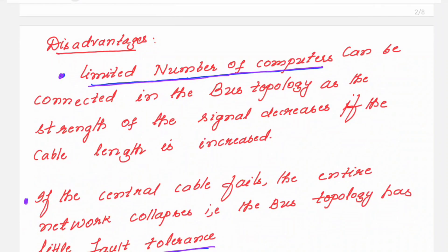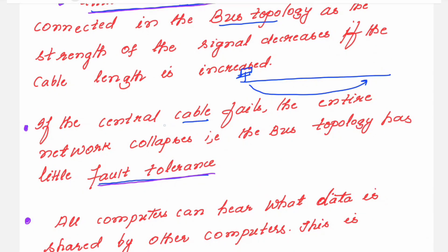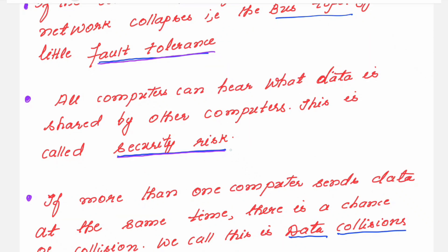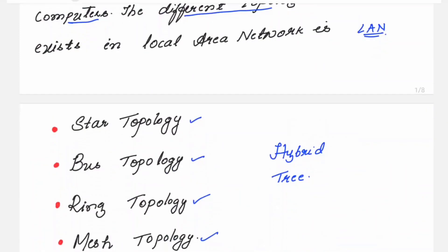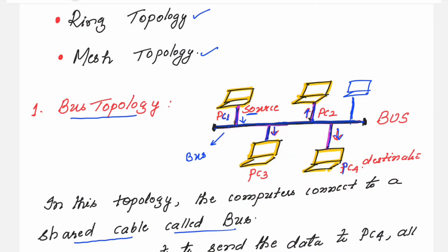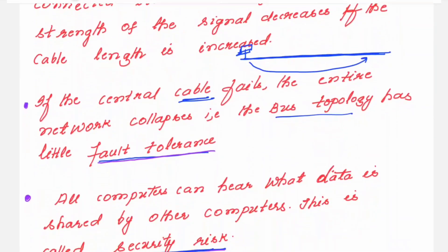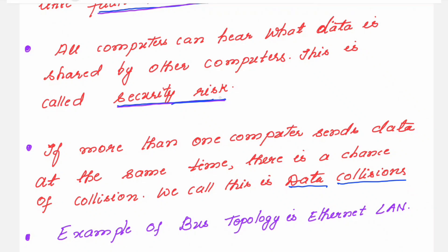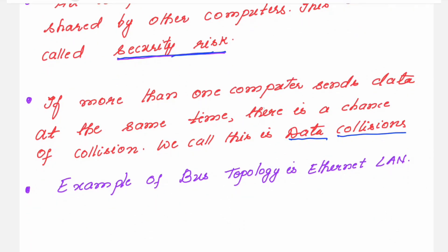The disadvantages of bus topology are: first, a limited number of computers can be connected, because the strength of the signal decreases if the cable length is increased. Second, if the cable fails, since it is the shared cable, the entire network will collapse — the bus topology has little fault tolerance. Third, there is a security risk because it is a shared cable and data is moved to all PCs connected, so confidential data can be heard by all systems. Finally, if more than one computer sends data at the same time, there is a chance of collision, called data collision.